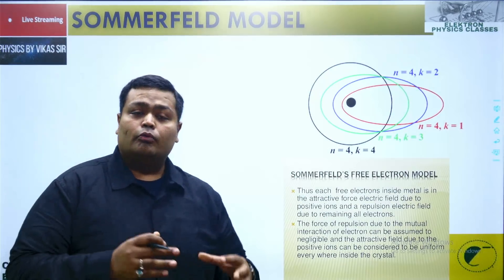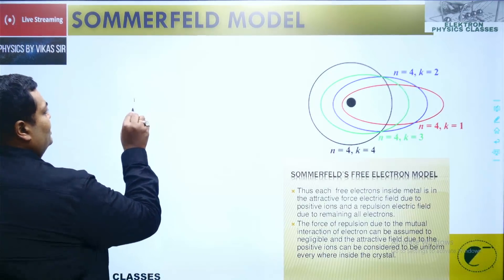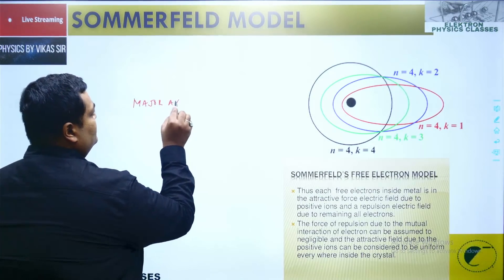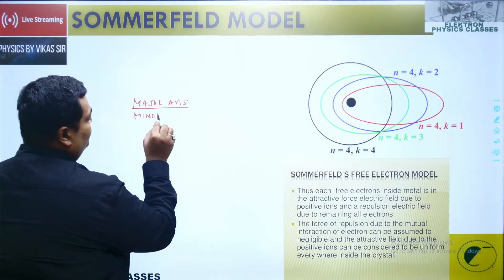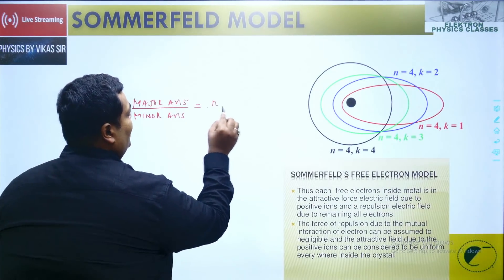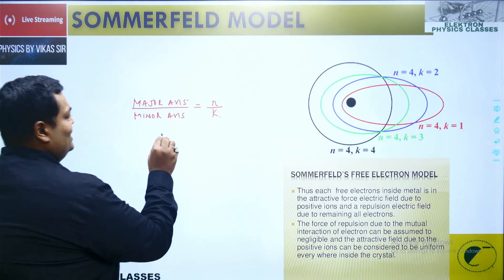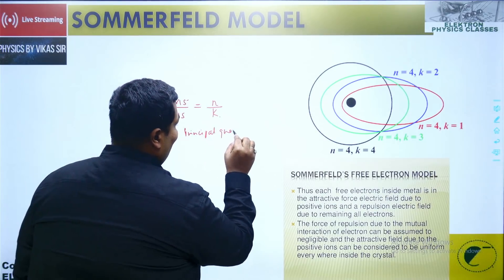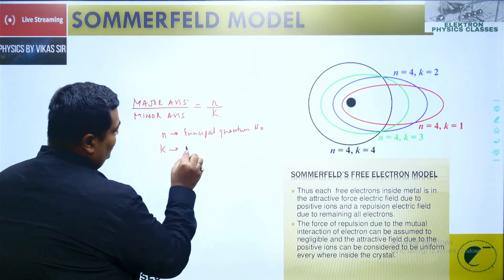So how is the existence of the elliptical orbits there? That is too simple. The ratio of the major axis upon the minor axis of the elliptical orbit is taken as equal to n upon k, where n is the principal quantum number and k is the azimuthal quantum number.